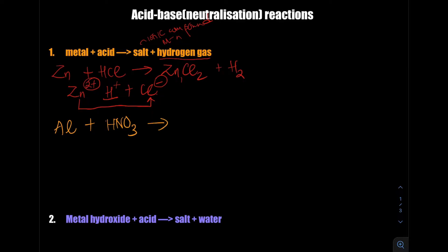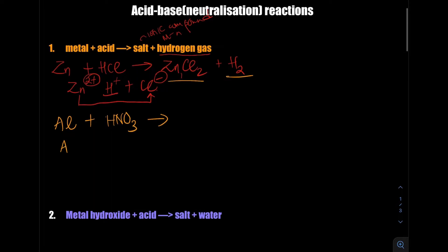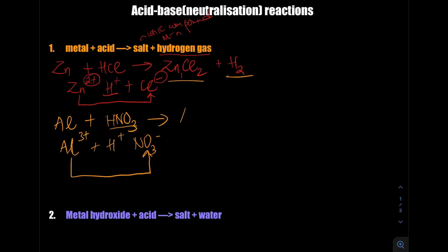The products will be a salt and hydrogen gas. Aluminium is in group 3, so it has a 3+ charge. The nitric acid donates a proton — H⁺ — and there will be the nitrate ion. This aluminium is attracted to the nitrate ion; they exchange their ions, giving aluminium nitrate, Al(NO₃)₃. The hydrogen produced is diatomic — H₂ gas — all the time.